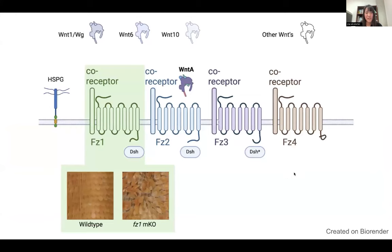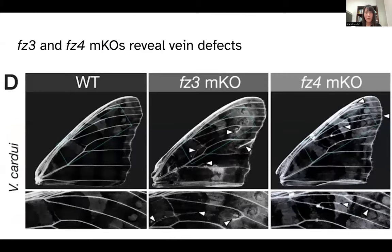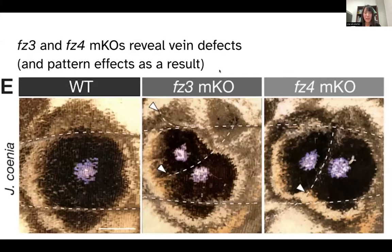So Fz1 is responsible for PCP effects acting independently of WNT ligands. For Fz3 and Fz4, we identified vein defects in knockouts of each independently, where white arrows point to ectopic vein formation or branching. These images were taken after chemically removing all scales from the wing using bleach and ethanol. Looking before scale removal, these vein effects also produce pattern effects in both cases.